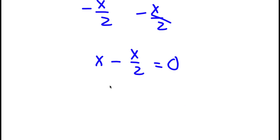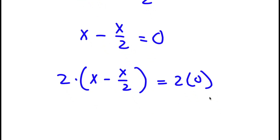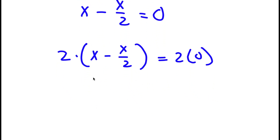Now I'm going to multiply both sides by 2. So now I have (x minus x over 2) times 2 is equal to 2 times 0. For 2 times (x minus x over 2), I'm simply going to distribute the 2 to all terms in my parentheses. First, 2 times x is simply equal to 2x.